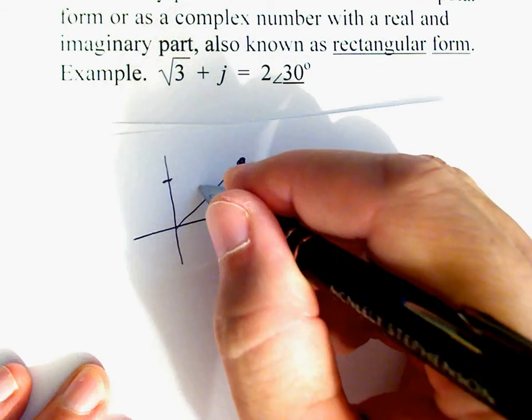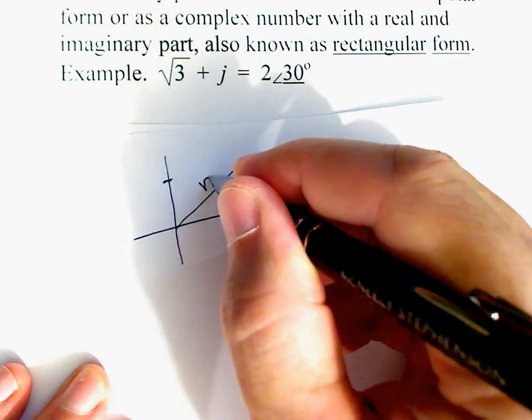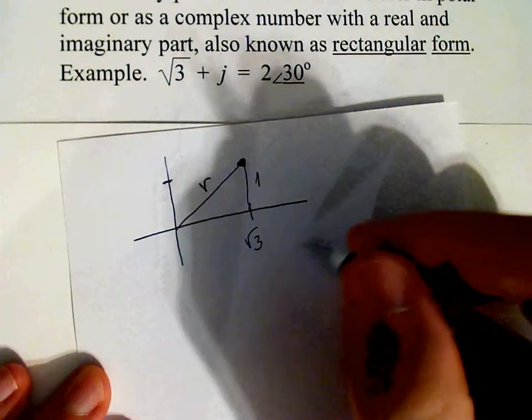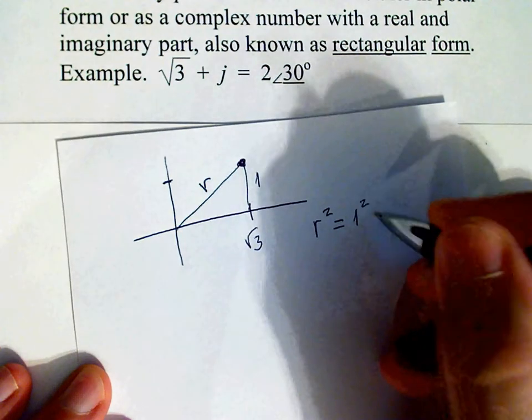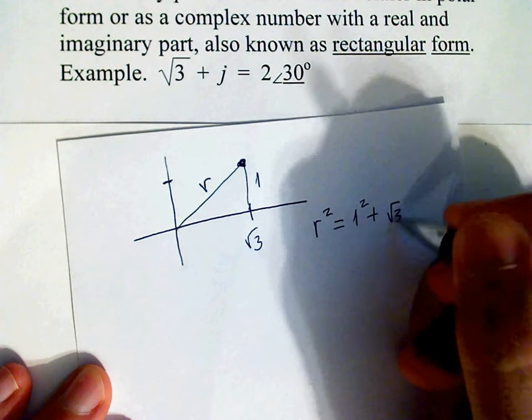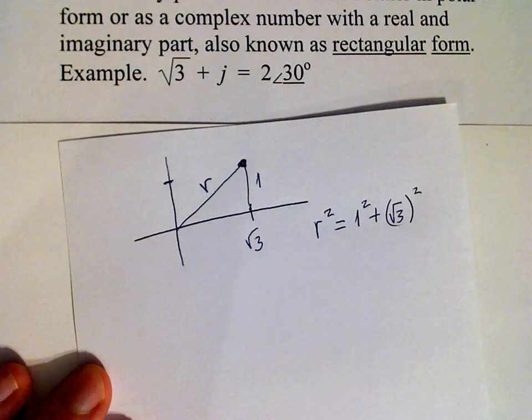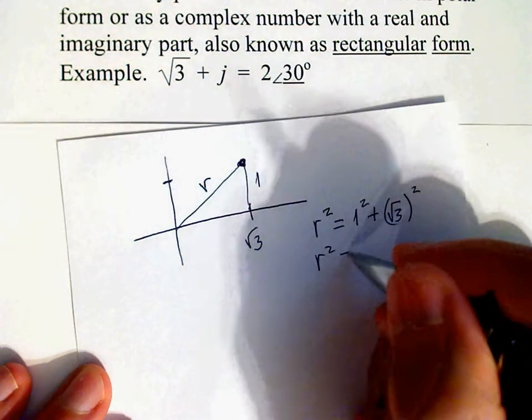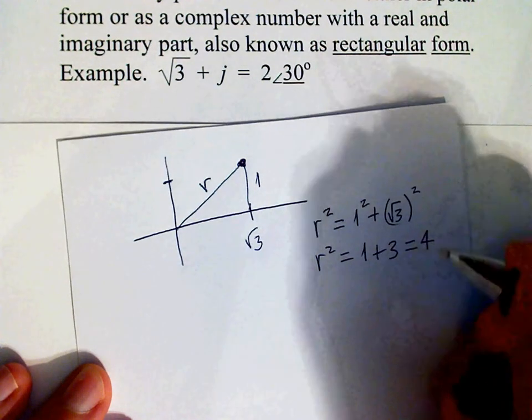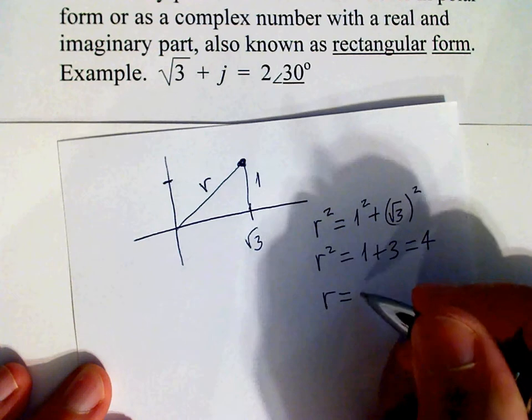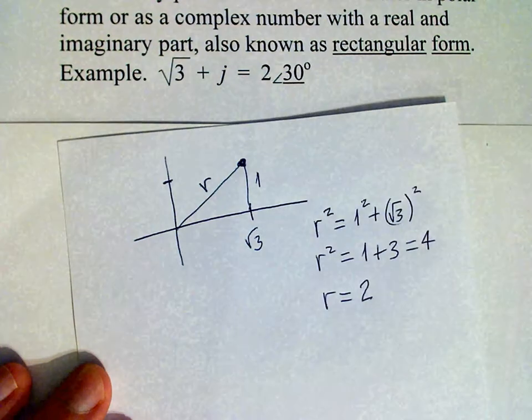Calling this length r, we have r² equals 1² plus (√3)². So r² equals 1 plus 3, r² equals 4, therefore r equals 2.